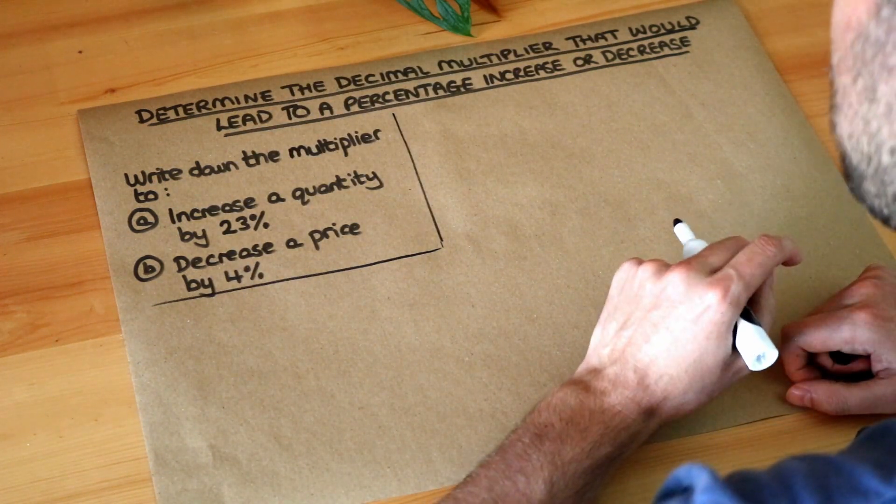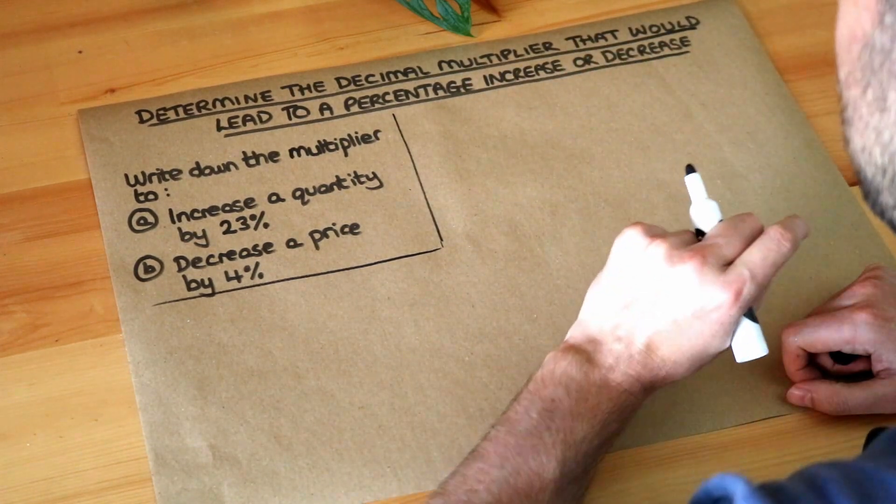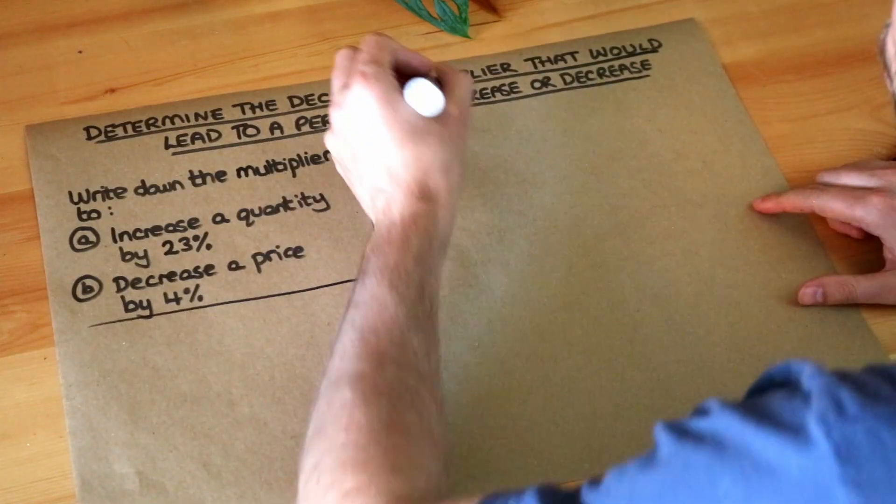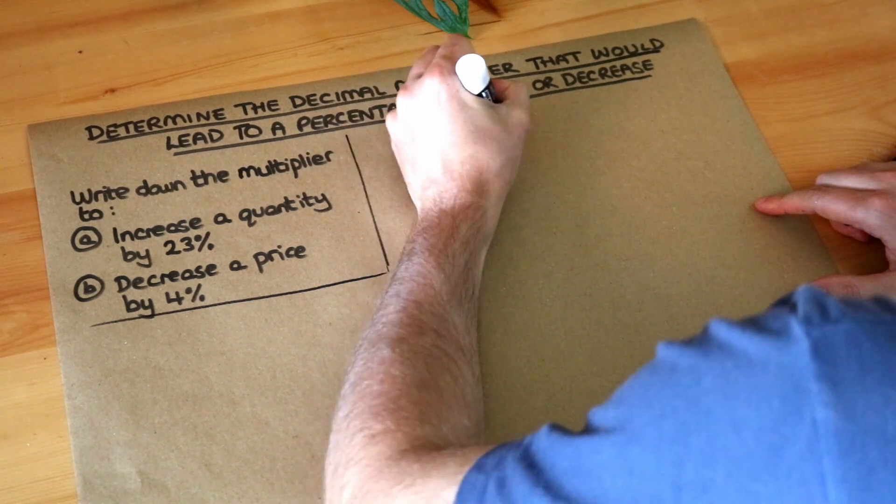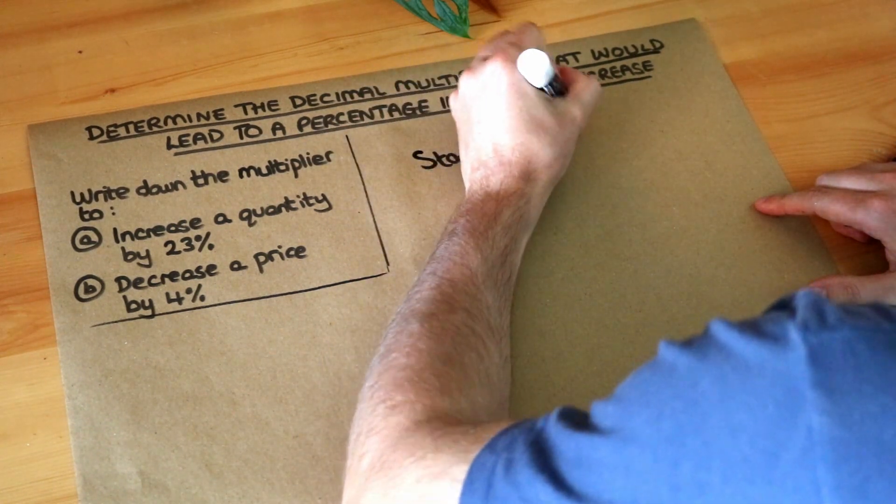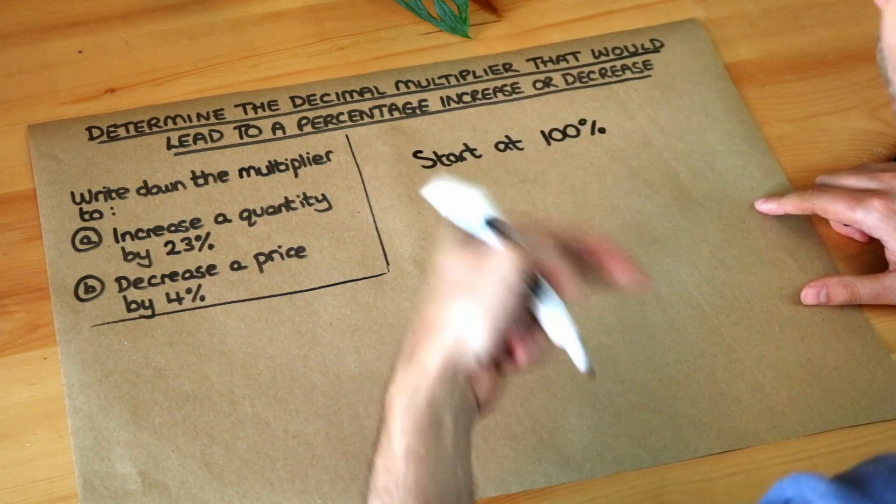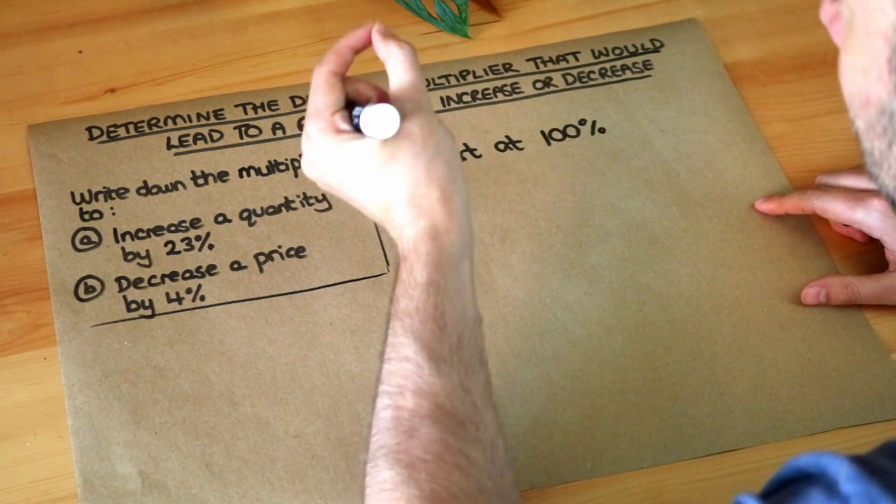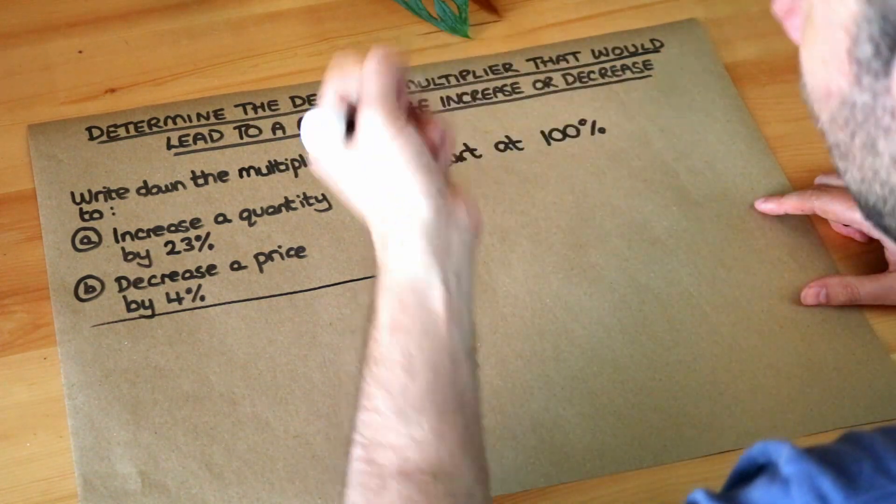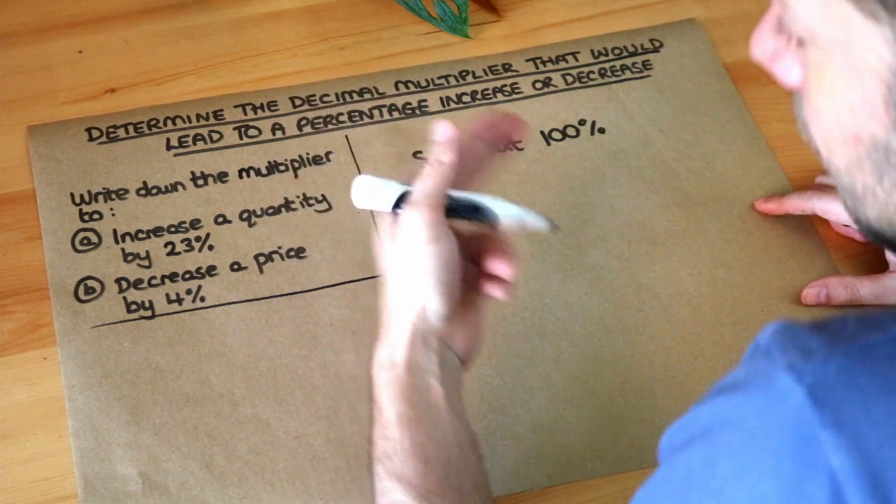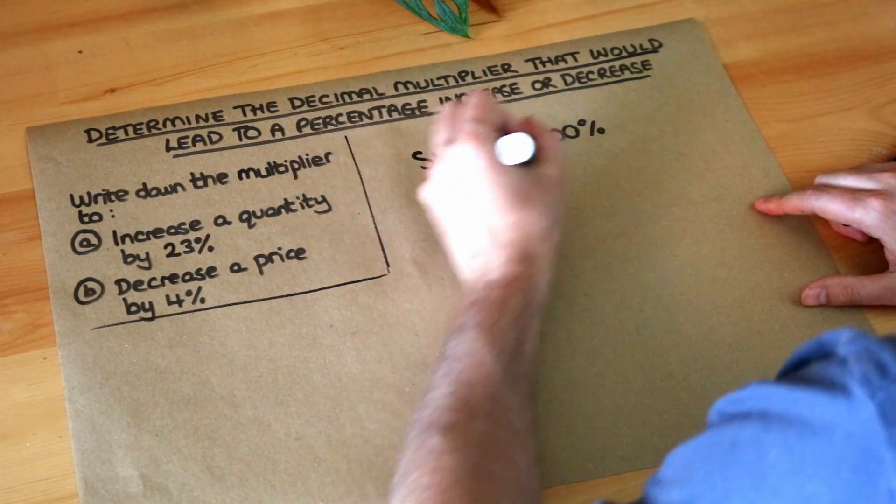Now when we're dealing with percentage increases or decreases, the key point is we always start at 100% because everything is 100% of its value. 100% of its value just means itself. So if I had 100% of 20, that's just 20. 100% of something is just itself.